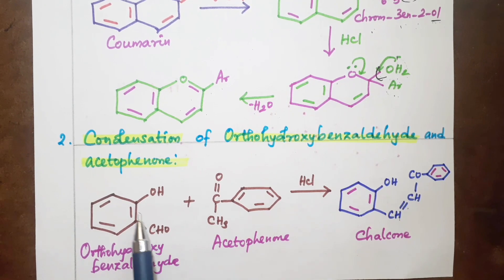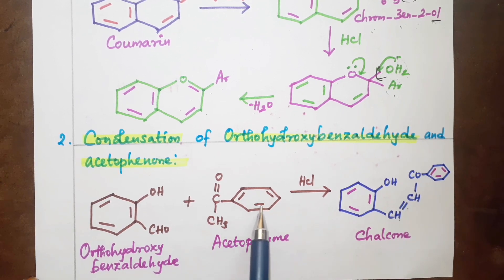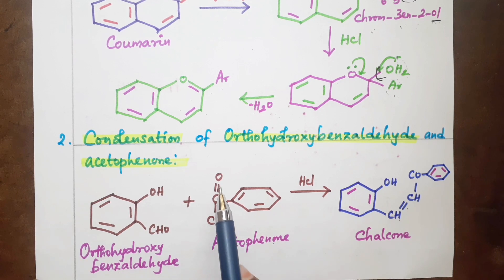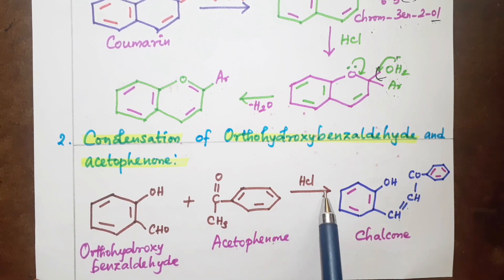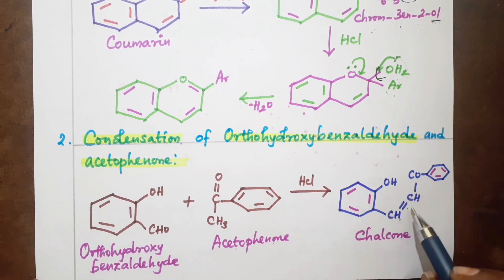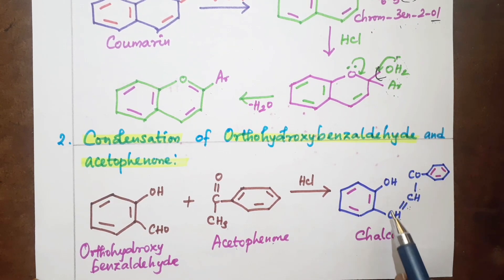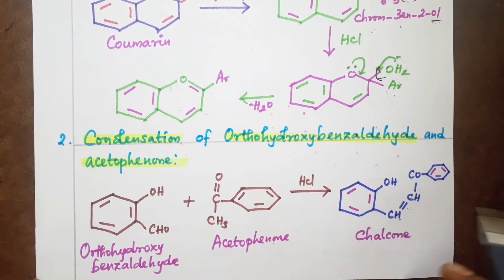These involve benzene rings and aryl groups. The reaction involves a ketone reacting in the presence of HCl. The starting material includes a benzene ring with OH and CHO groups, and a chain: CH double bond CH, then CH double bond CH single bond CH, with a phenyl group. This product is called chalcone.